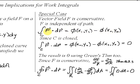Now, we also learned that when C is a closed curve, this is going to necessarily mean that the endpoint is the same as the starting point. And so, when we subtract them, we get zero.